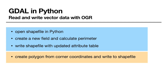After we've updated the attribute table, we will use Python and GDAL to write a new shapefile — basically a copy of our input shapefile. We'll also create a polygon from scratch, based on the extent of our input shapefile, and write that new polygon to an entirely new shapefile.